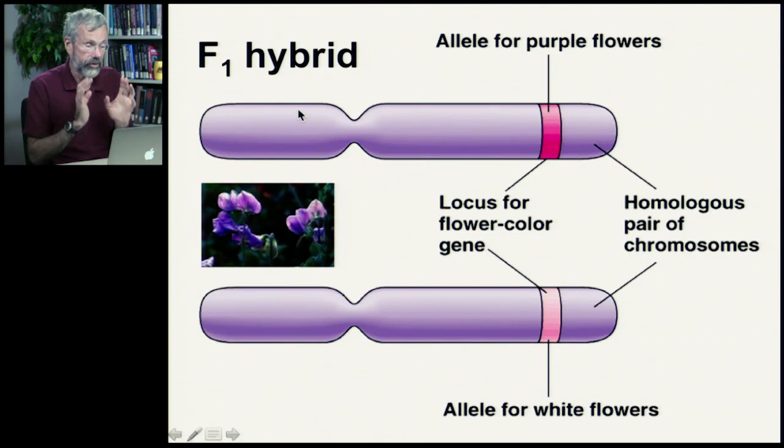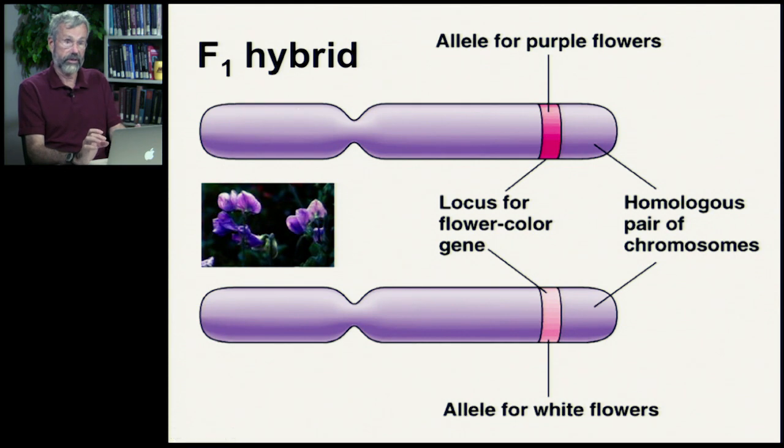So, let's go back and see what we've got, and let's do this with the knowledge that we have now of chromosomes and alleles. Here we have a particular chromosome in the pea plant, and there's a certain region of this chromosome that codes for flower color. This is the locus or the location on the chromosome for the flower color gene, and locus is a really useful term that we need to remember. Here's the locus, this is just the site along the chromosome where that gene exists.